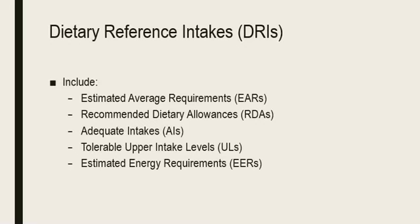Within the DRIs there are five sets of standards: the Estimated Average Requirements (EARs), the Recommended Dietary Allowances (RDAs), Adequate Intakes (AIs), Tolerable Upper Intake Levels (ULs), and the Estimated Energy Requirements (EERs).